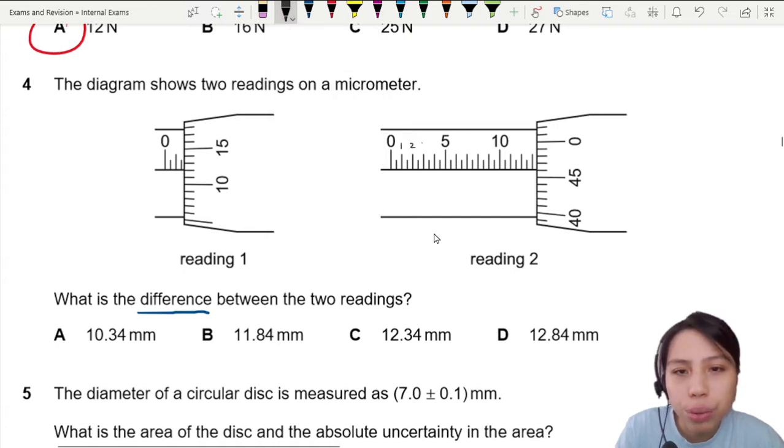So if this is 0, 1, 2, 3, 4, 5, then the line in between is 0.5, 0.5, 0.5.